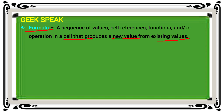In the sequence of methods, what are the categories? For example: value, cell reference, function, and operation. For the value category, the exact value you can enter — for example, A1 cell equal to 5.